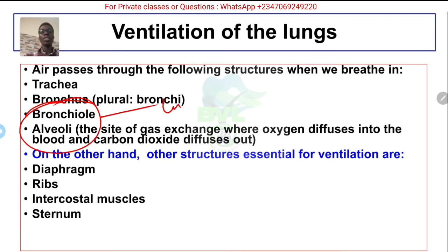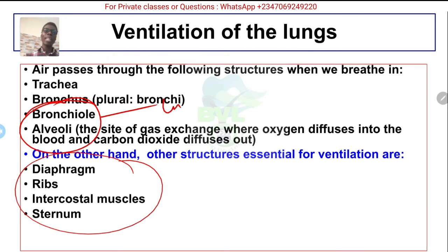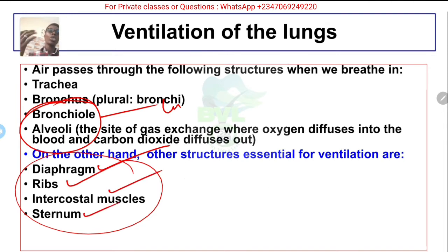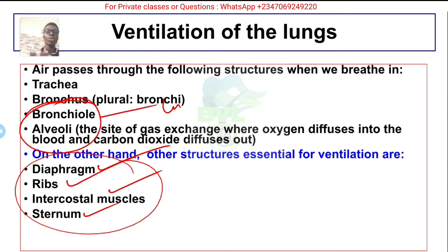On the other hand, there are other structures also essential for breathing — air will not pass through them, but without them we can't breathe in and out. These are the diaphragm, the ribs, the intercostal muscles, and the sternum. The diaphragm is the muscular sheet which goes down when we breathe in and goes up when we breathe out. The sternum is the breastbone.